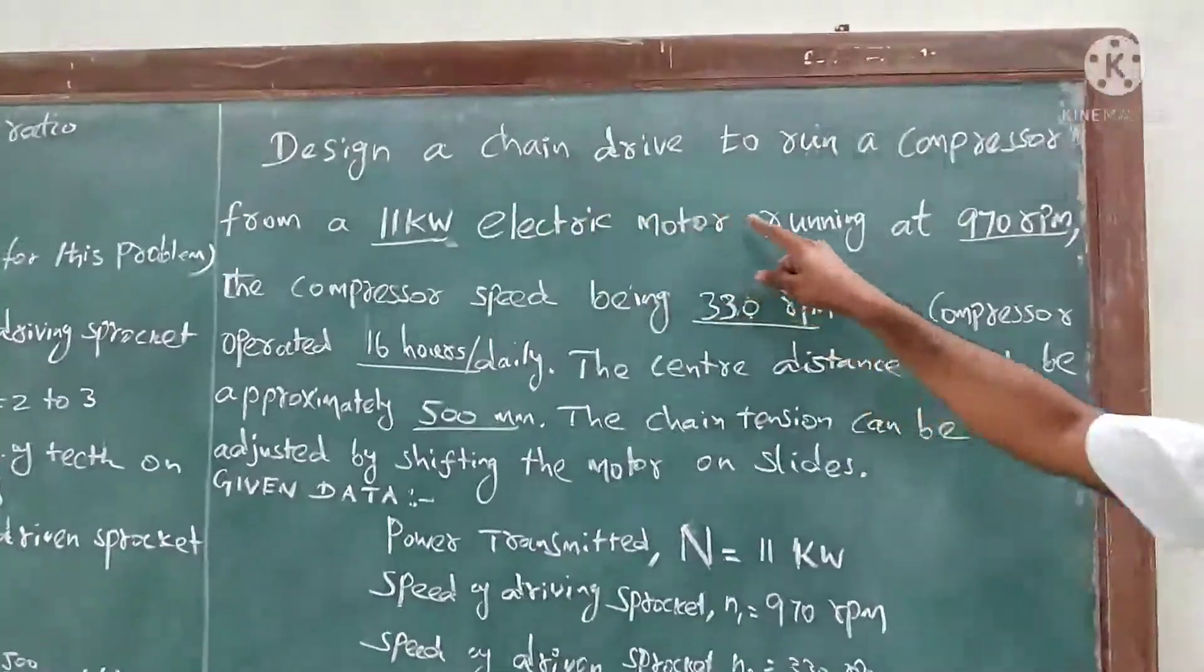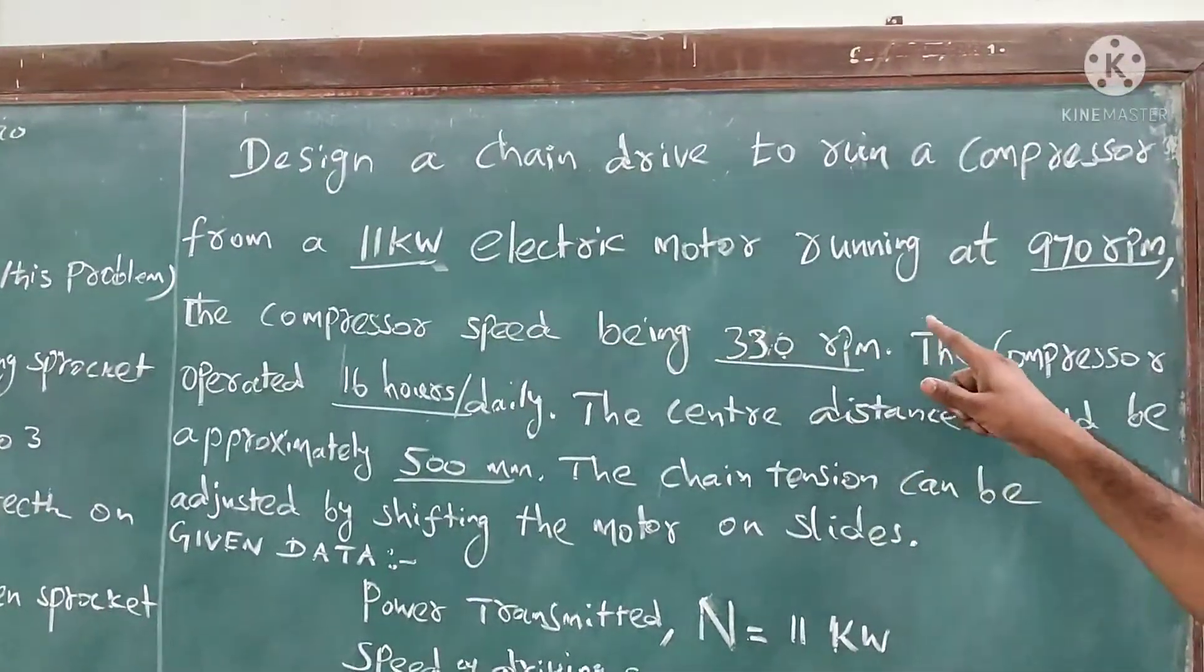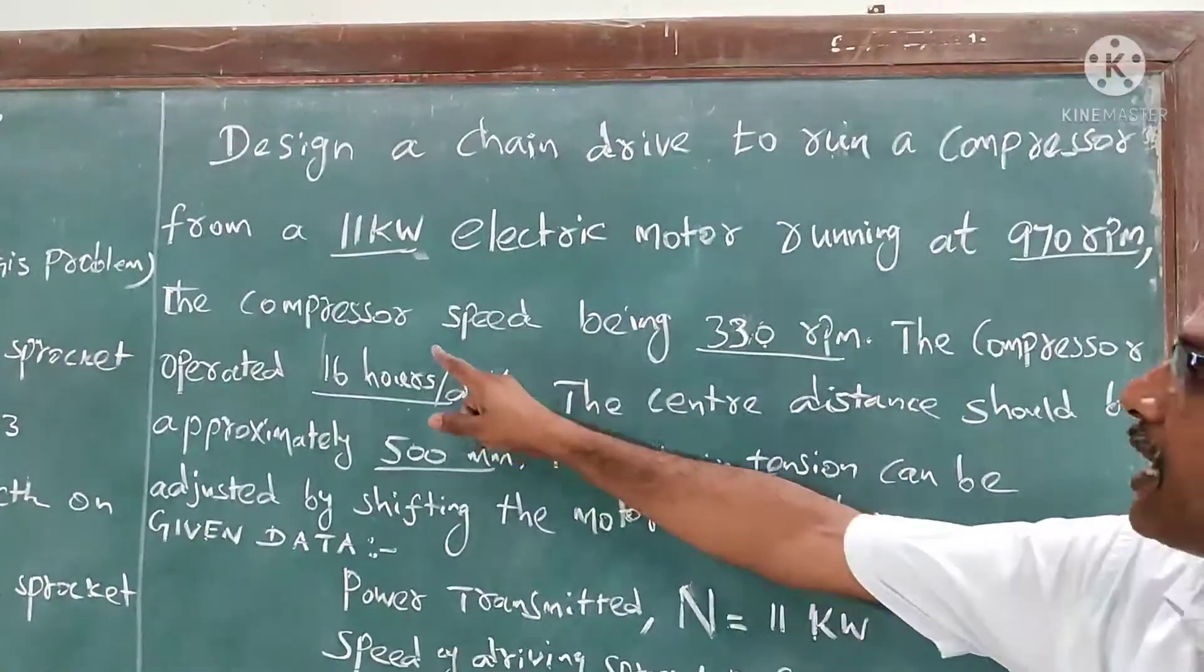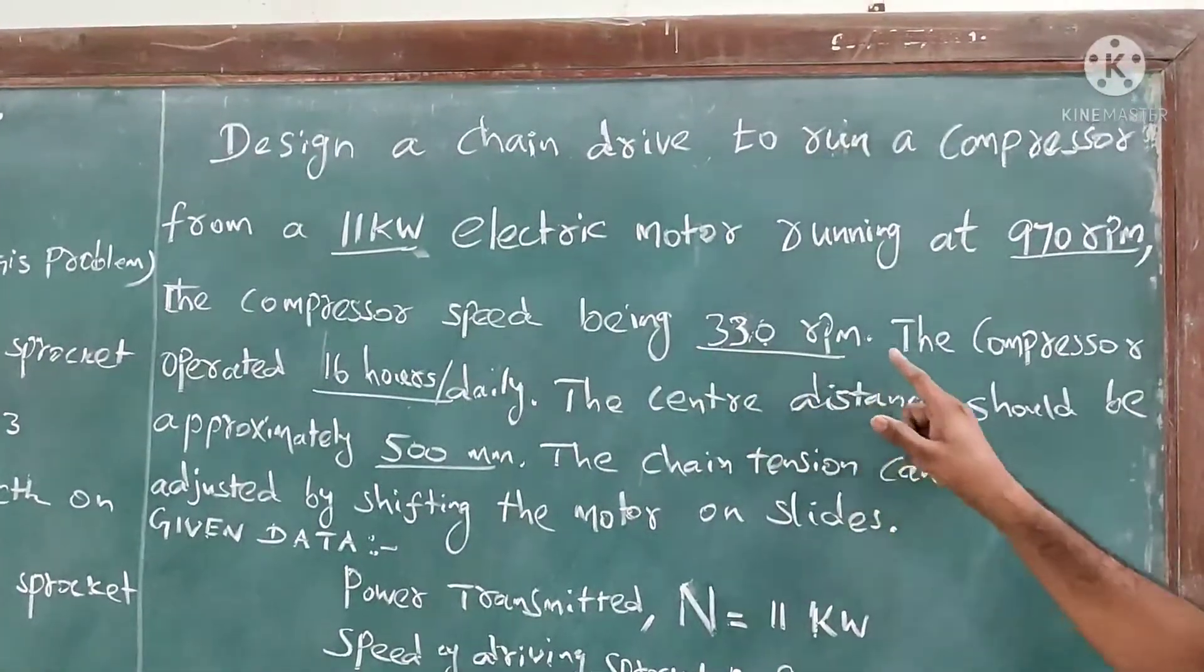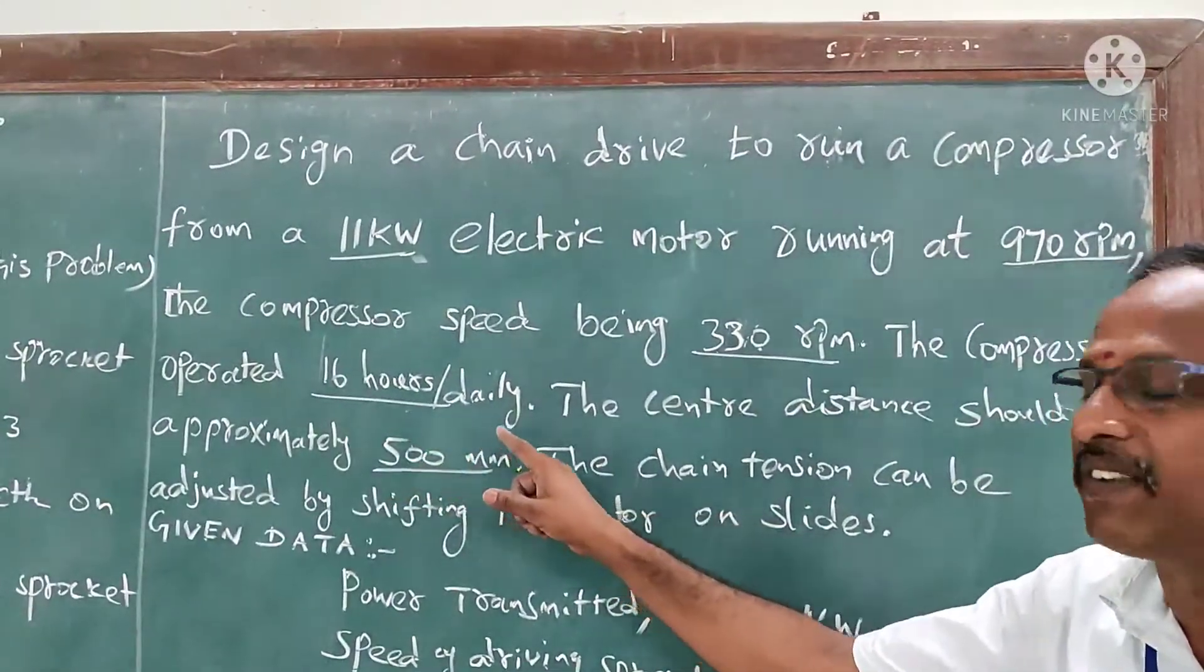Design a chain drive to run a compressor from an 11 kilowatt electric motor running at 970 RPM, the compressor speed being 330 RPM. The compressor operates 16 hours per day.